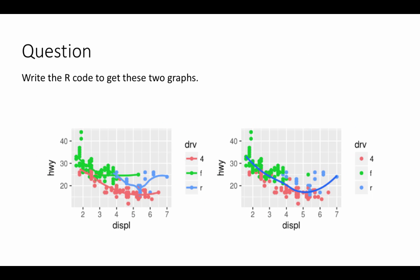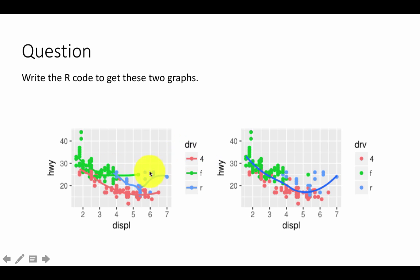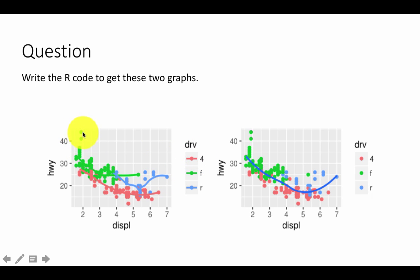Let's look at two other plots. We say write the R code to get these two graphs. The difference here is that the color of the point depends upon the drive, and the color of the smooth line also depends upon the drive. So the color of the point and the color of the line both depend upon the drive, and also the point is still bigger than usual — the size of the point. So this plot is almost the same...